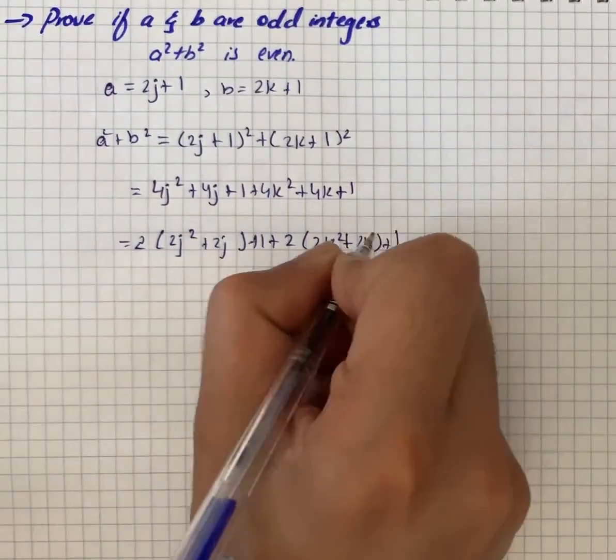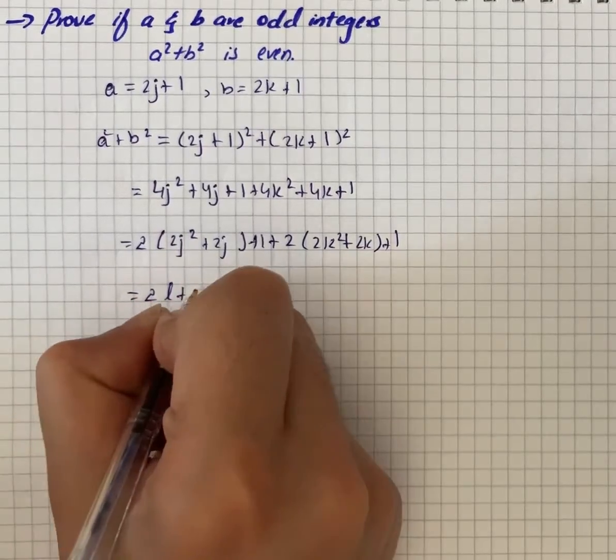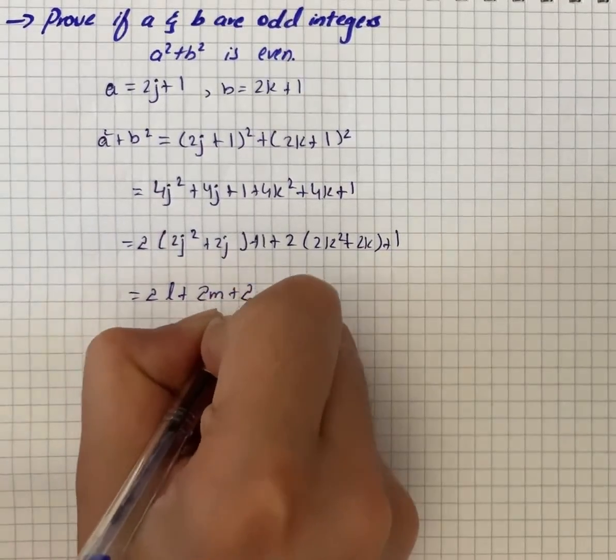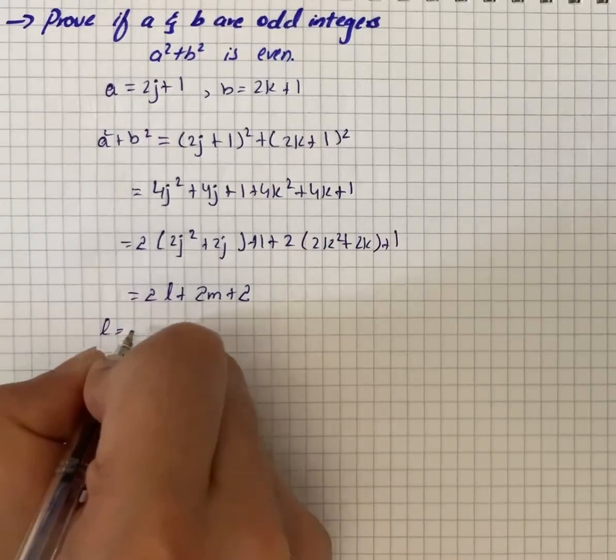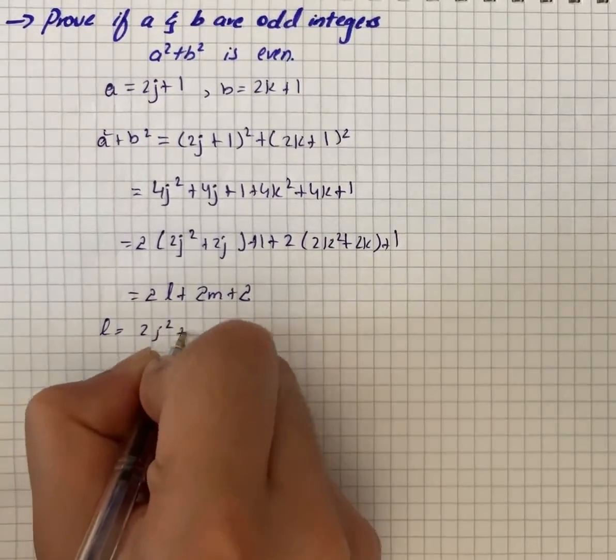In simplified form, 2l + 2m + 2, where l = 2j² + 2j and m = 2k² + 2k.